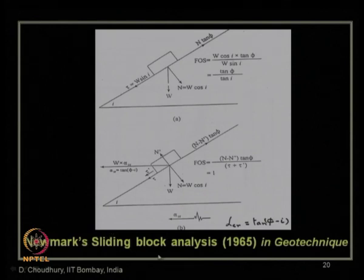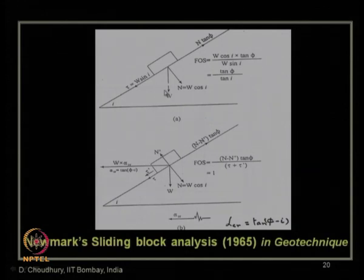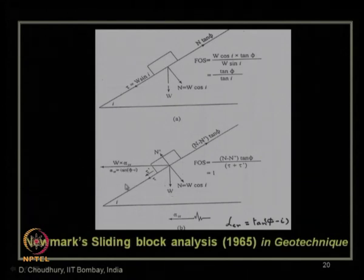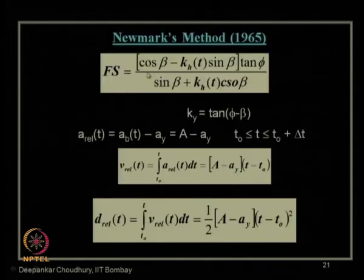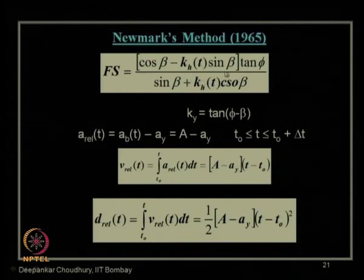The Newmark sliding block method, another advanced method than Terzaghi's analysis, appeared in the journal Géotechnique in 1965. It is pioneering work because it extended the basic concept of a block sliding over a sloping surface in the static case to seismic events, considering seismic inertia forces. The factor of safety expression was given by Newmark considering horizontal seismic acceleration, and later modified to include vertical seismic acceleration.